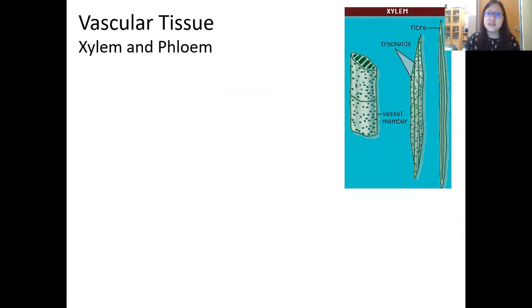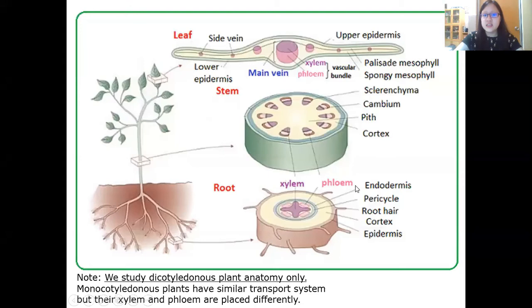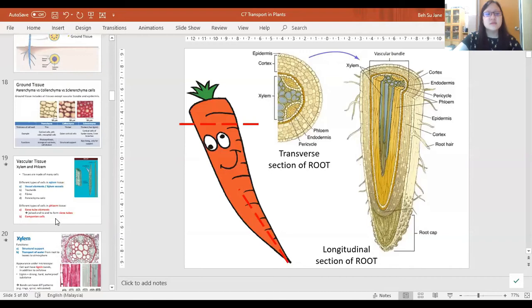The most important thing is knowing where xylem and phloem are placed. A useful memory aid: xylem is always on top or inside. In the leaf, xylem is near the upper epidermis. In the stem and root, xylem faces the inward inner layers. So xylem is always on the top or inside — that's the most important rule.